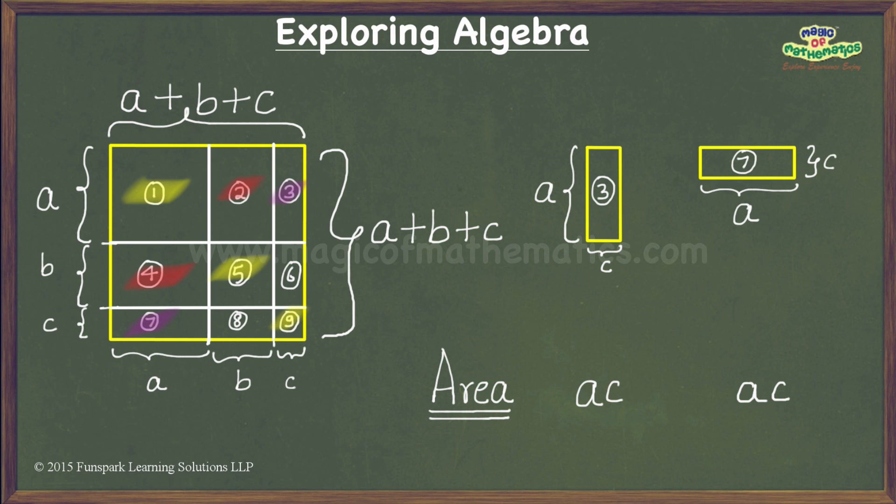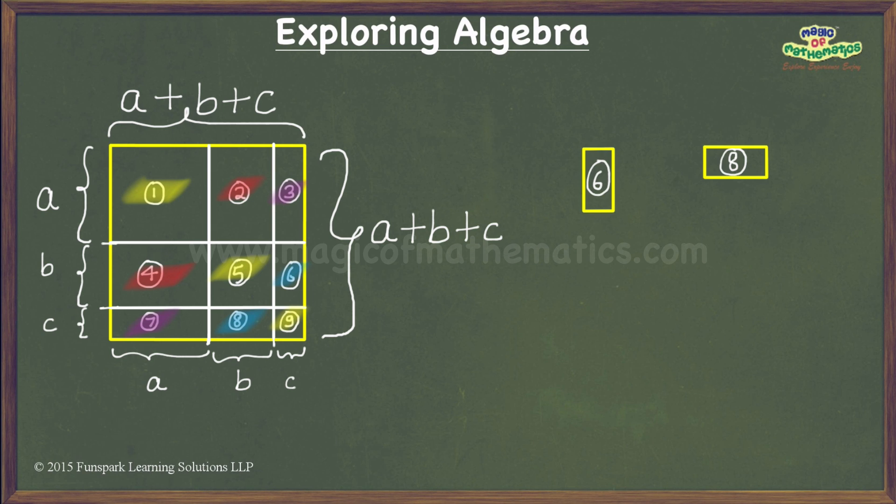Let us now turn our attention to the final two pieces, namely those numbered 6 and 8. These again are rectangles of dimensions b units by c units each. Hence, their areas are bc square units each.